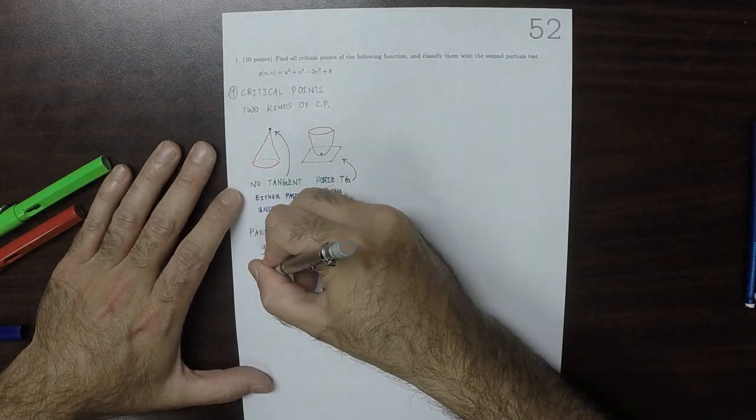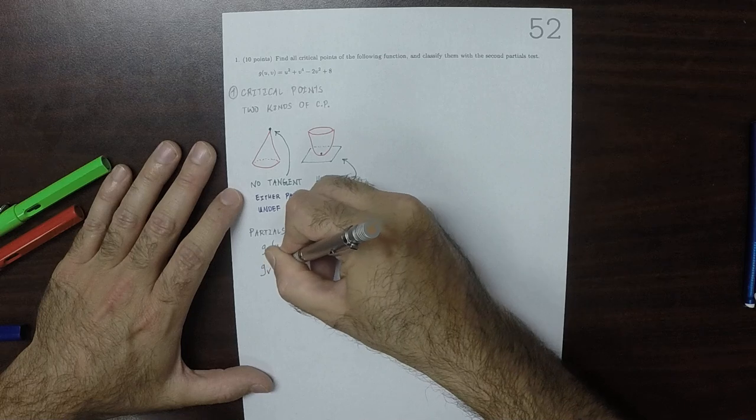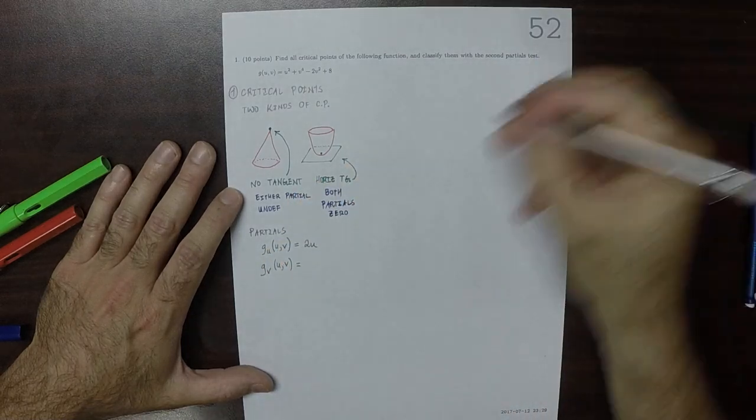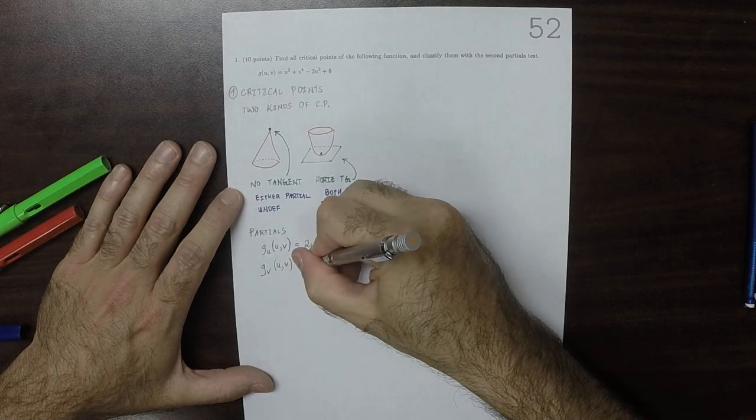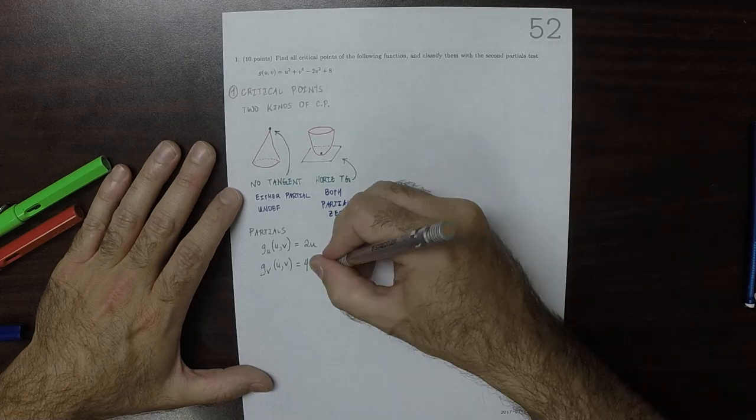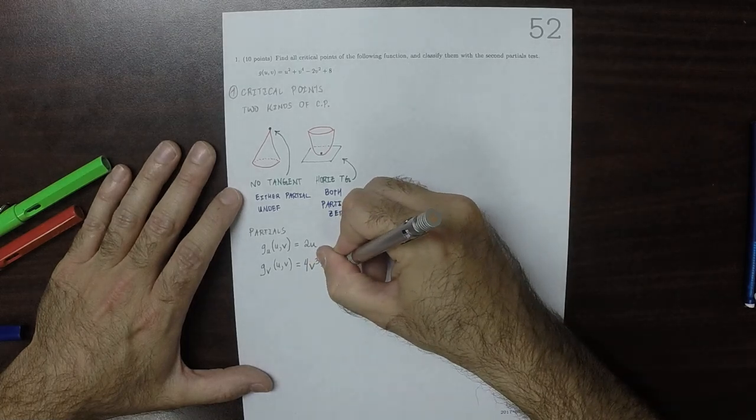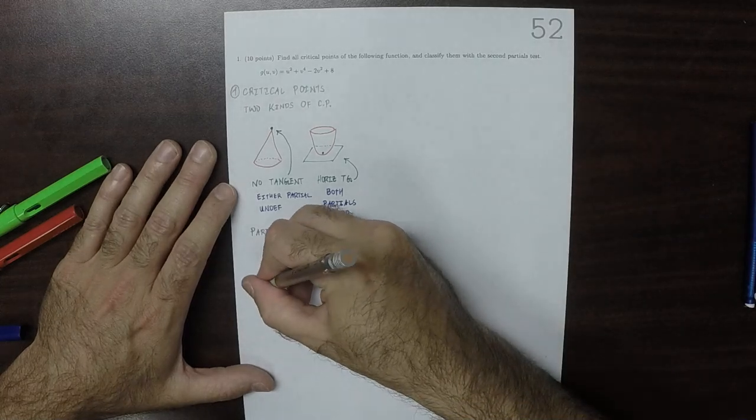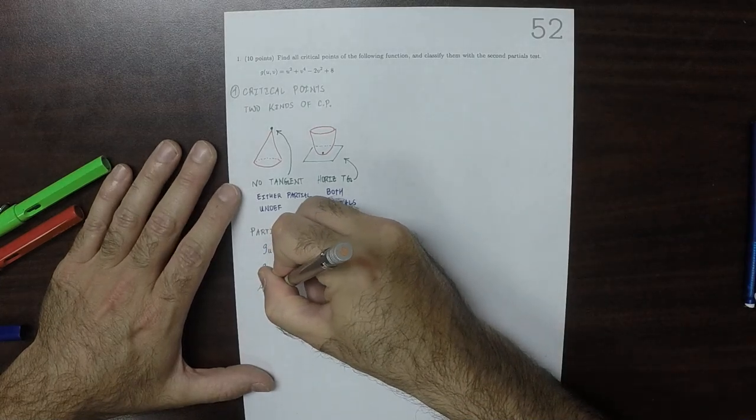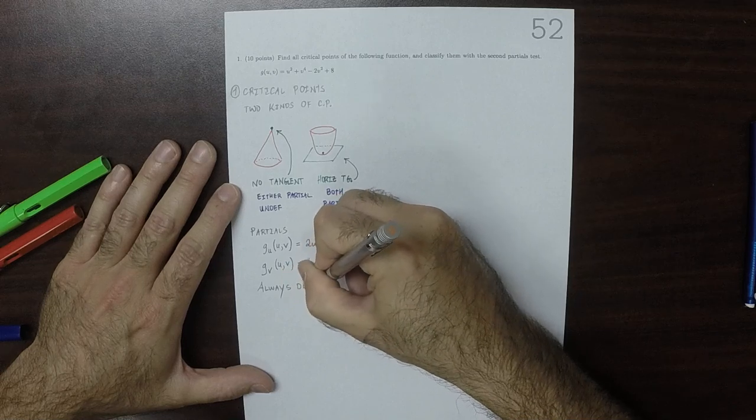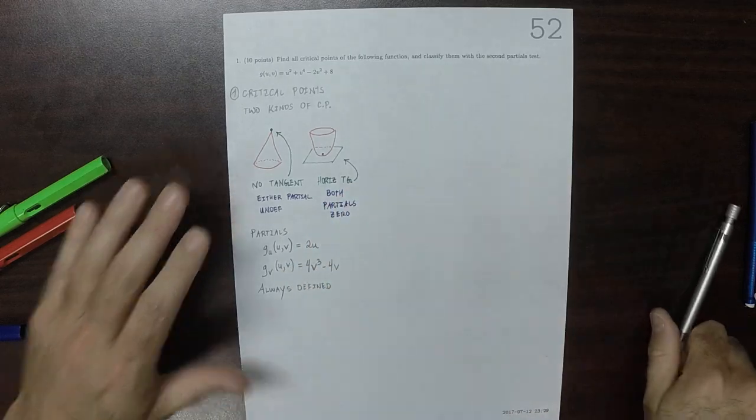Then the V partial is 4V cubed minus 4V. So then, notably, these are always defined for any U and V.